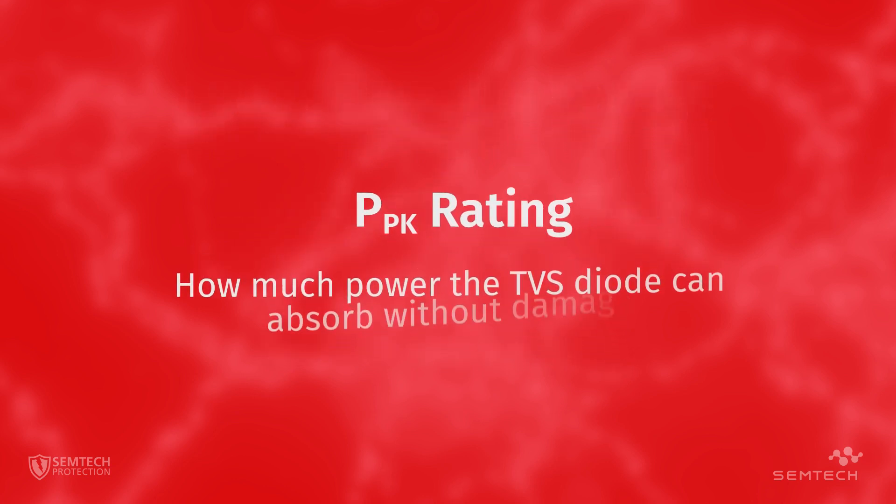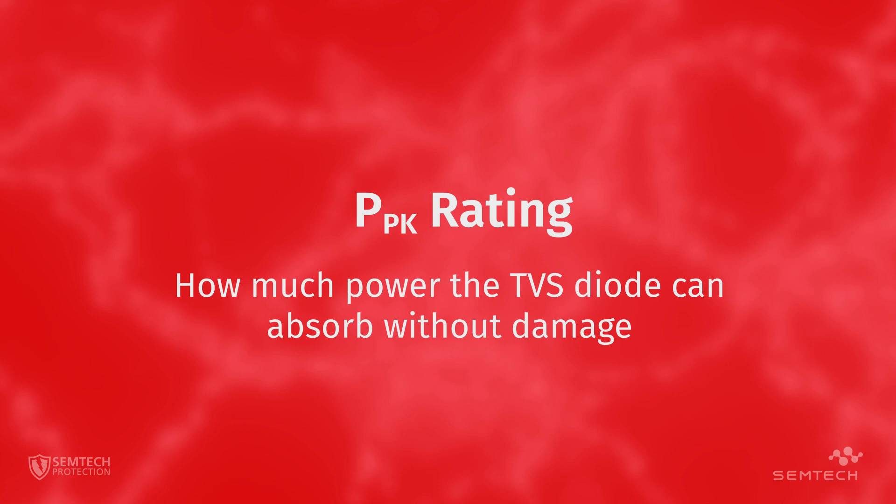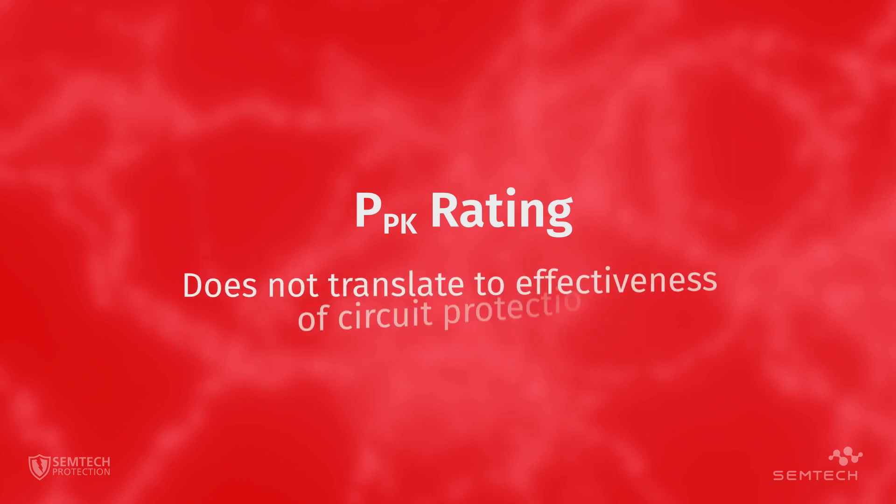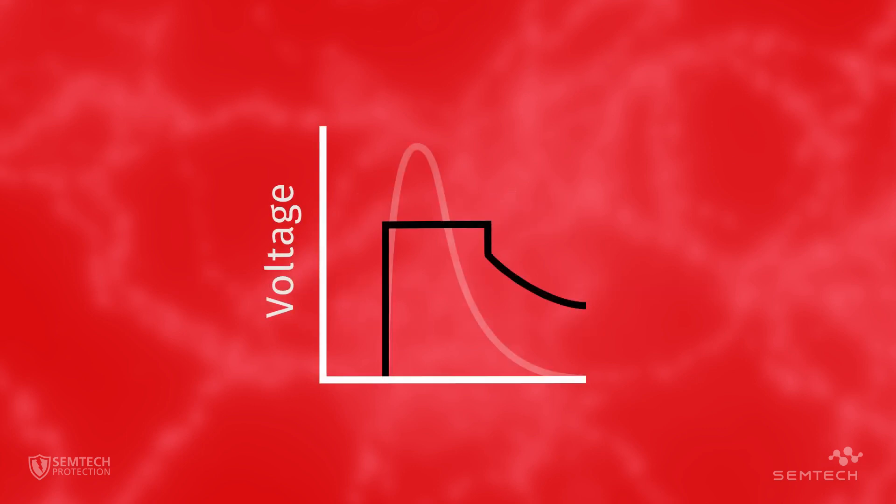The peak pulse power rating shows how much power the TVS can absorb without damage but doesn't always predict its ability to protect a circuit. Therefore, it's more important to focus on the clamping voltage when assessing the effectiveness of a TVS in safeguarding a circuit.